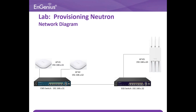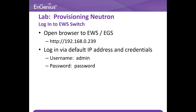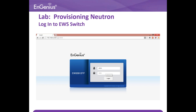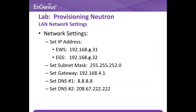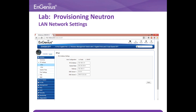This is a simple network diagram for the lab. Open browser and login to EWS EGS default IP and login with the default credential. This is the login page of the EWS switch. Setup the IP address for the EWS and EGS switch as shown in the screen. This can be done on the LAN page as shown.